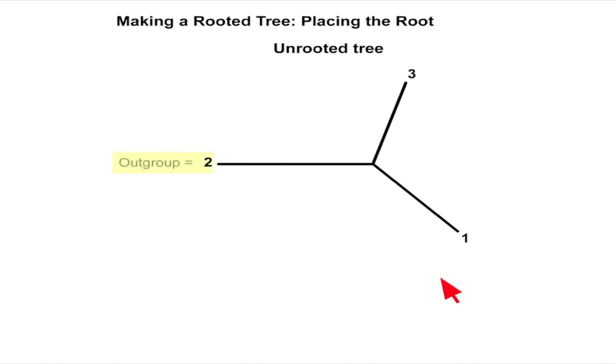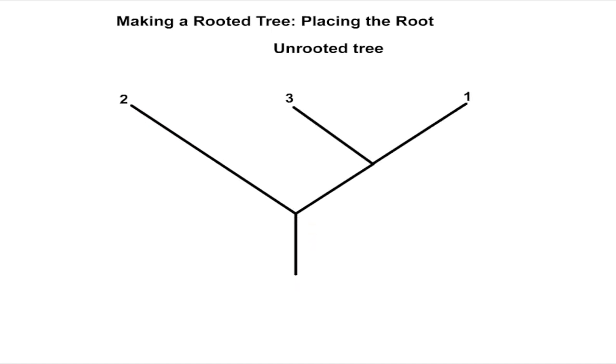Notice that for this unrooted tree containing three terminal nodes or taxa, three different rooted trees can be produced, depending on which group is used for the outgroup.